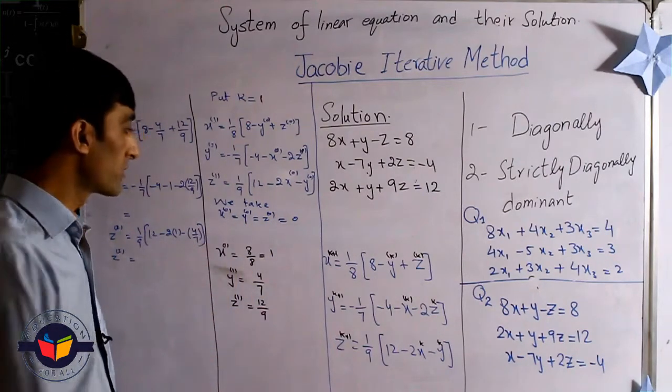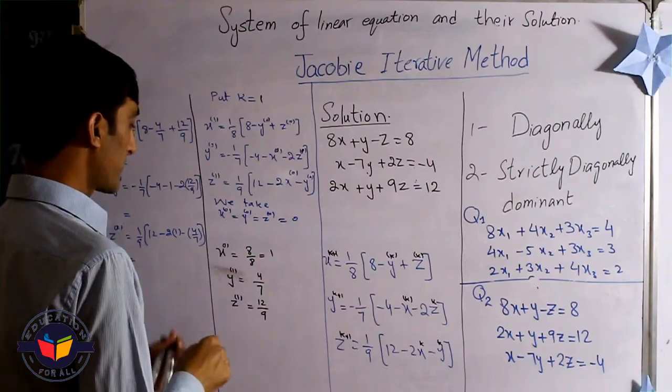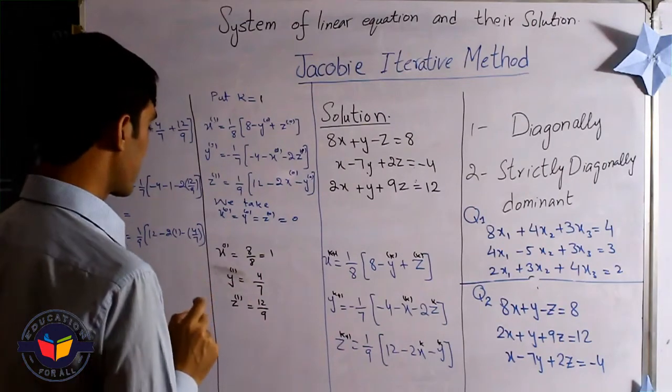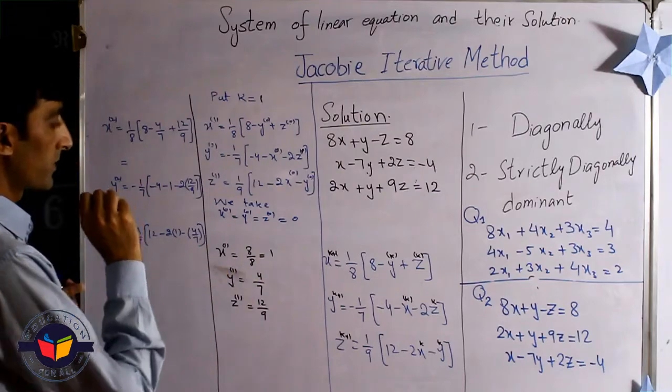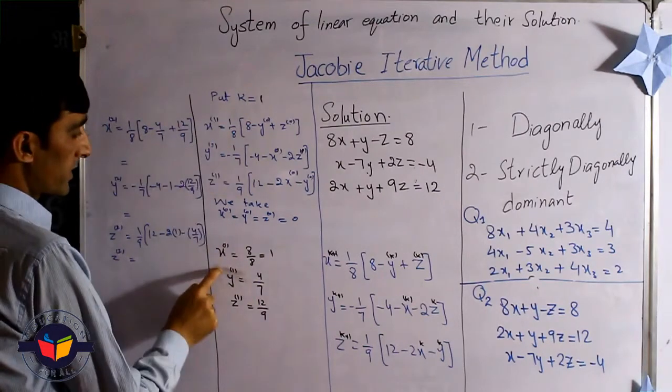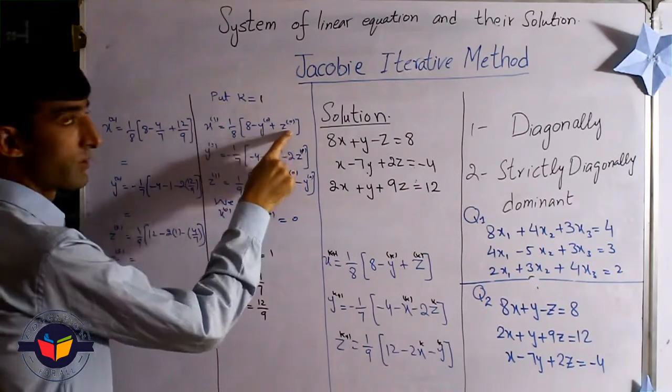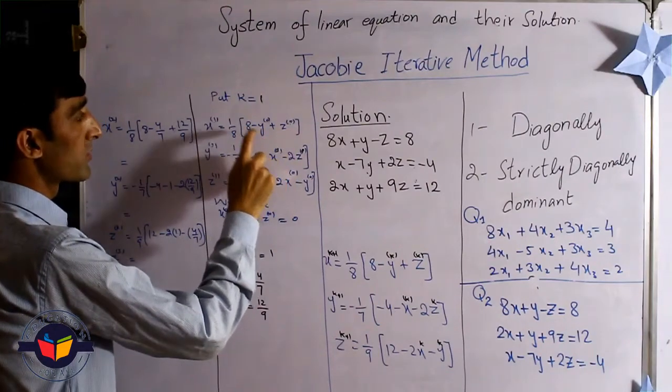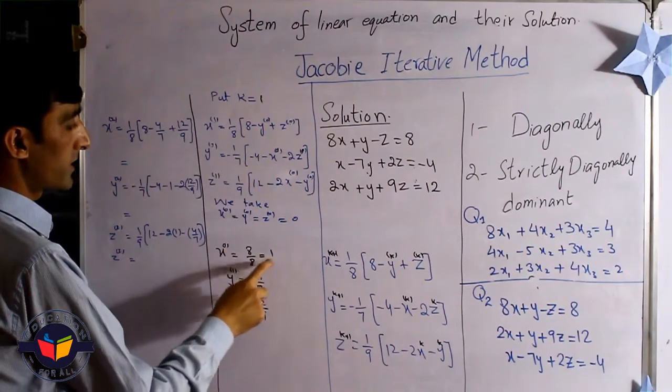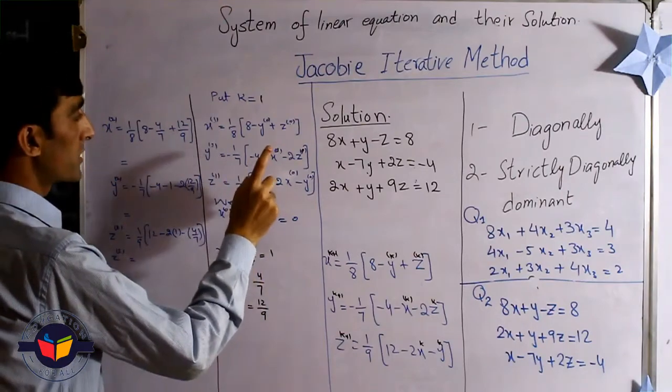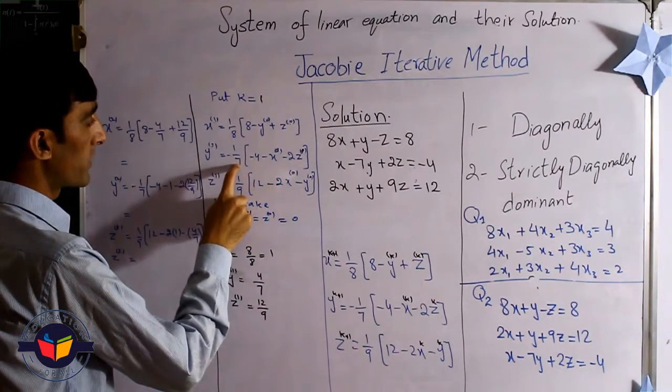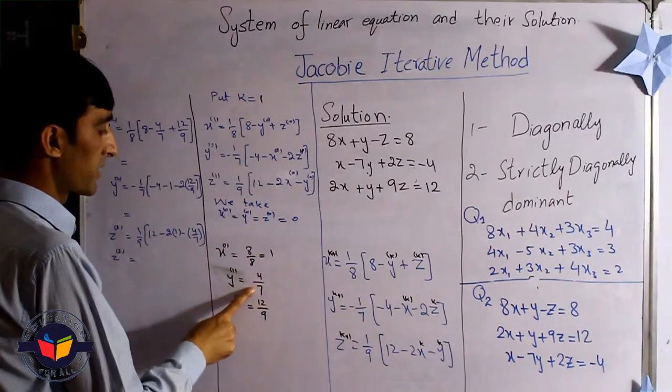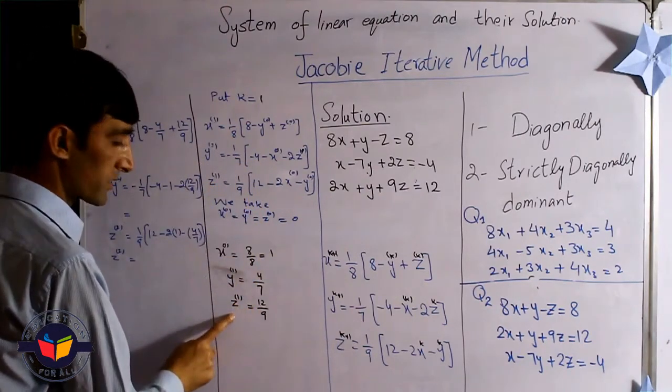Now we substitute this value in this problem, and we get the result. How does this one become? Here is x₁ and we put 0, 0. When we put 0, 0, the result is 8 over 8, that is equal to 1. When we put here 0 and 0, the result is -4 over -7, that is 4/7. And in the third one is this one.